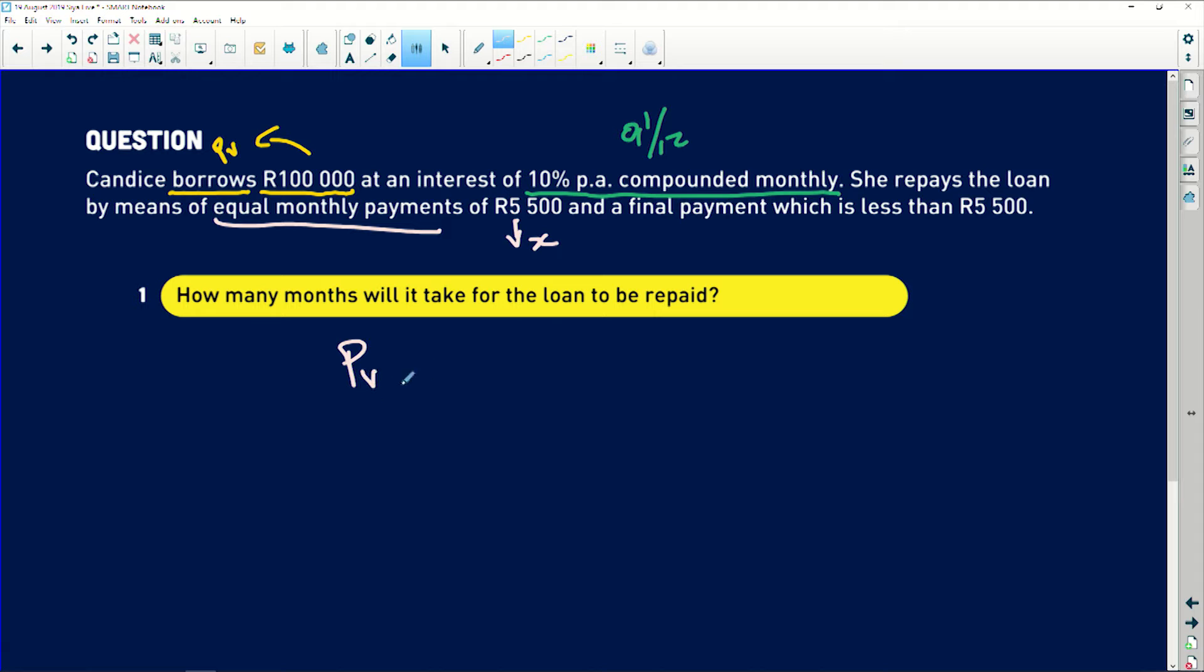Remember as well, how many months will mean the n part of the equation. Now, the equation is PV equals X times open bracket 1 minus (1 + i) to the exponent of negative n, all divided by i.